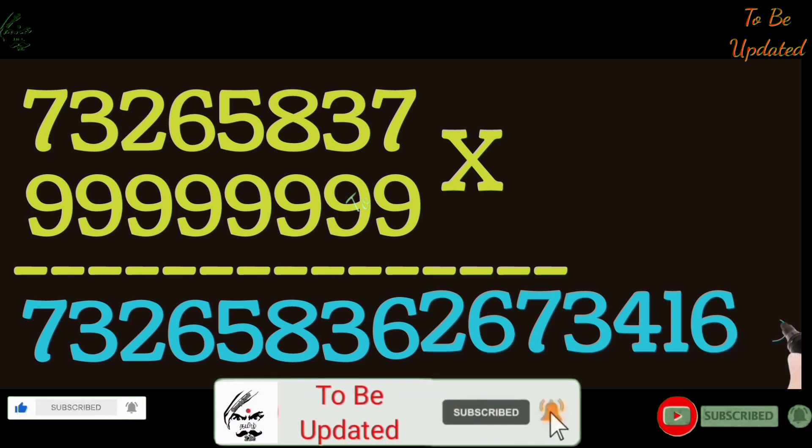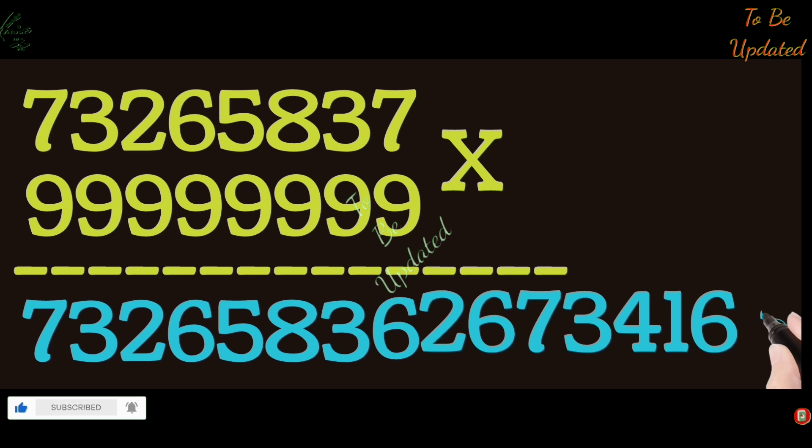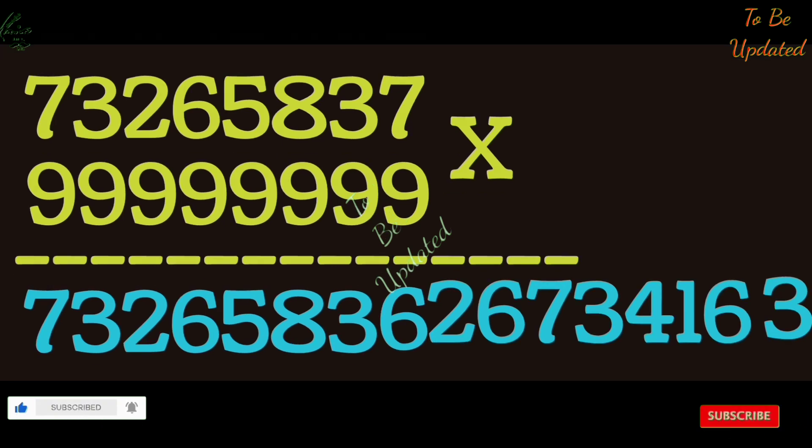Then the last number 7 must be subtracted from 10. So we get 3. The answer to the question of 73265837 multiplied with 99999999 is 7326583626734163.